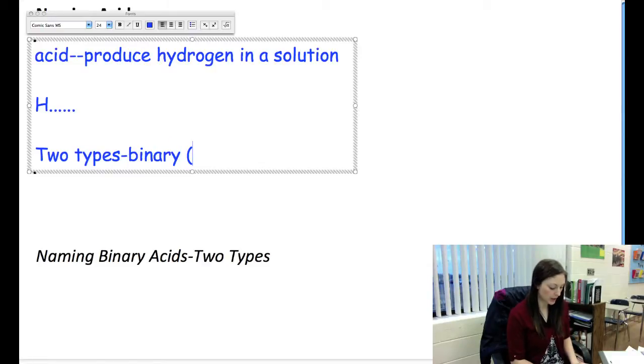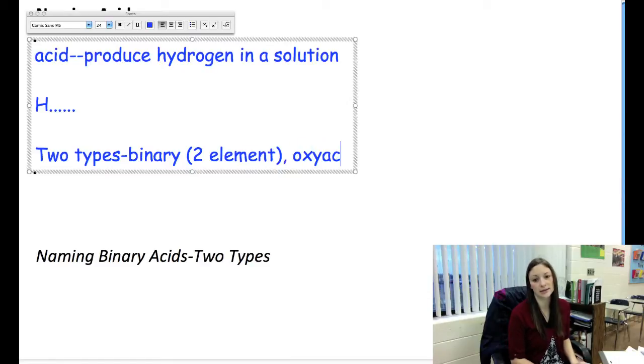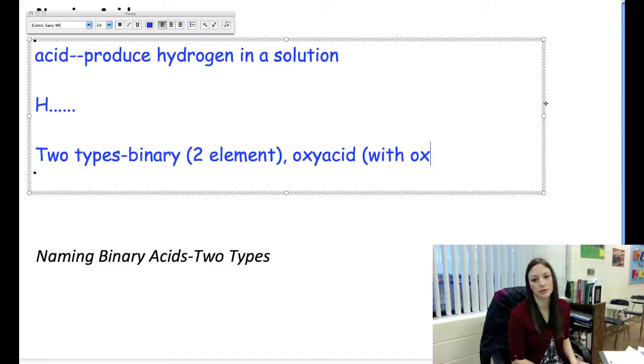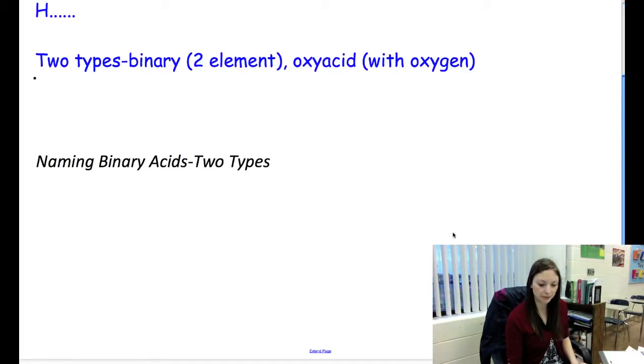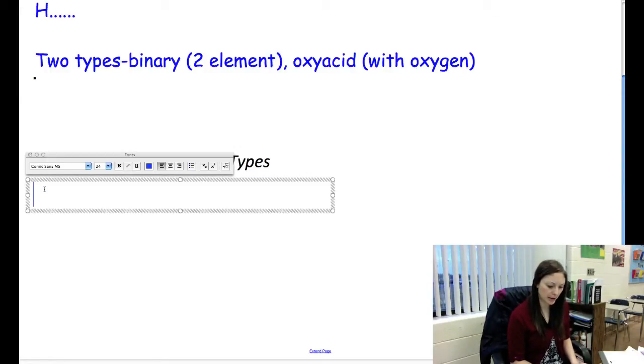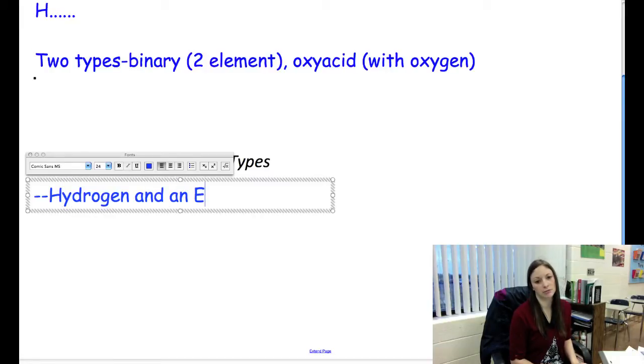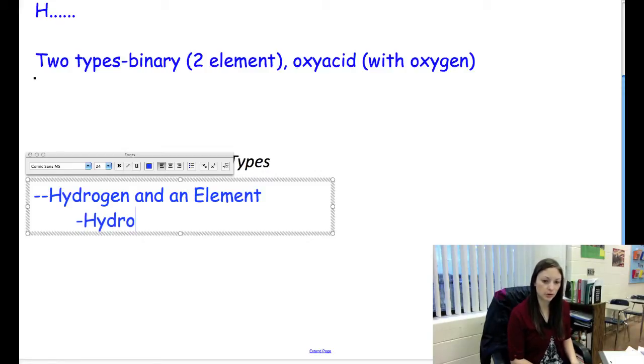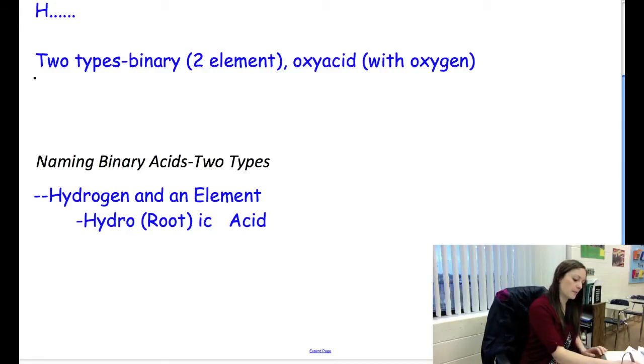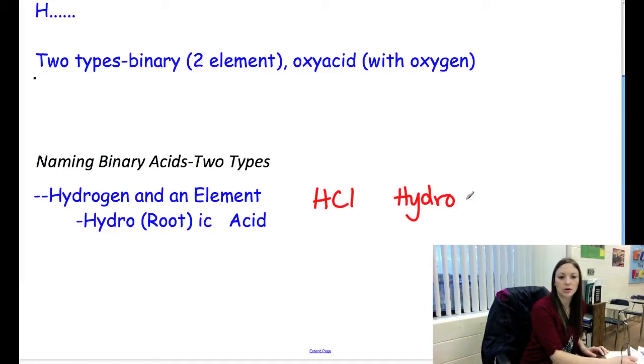We're going to have H something. There are two types of acids, and they are binary, where one's going to have two elements, or you're going to have an oxyacid. An oxyacid is just what it sounds like, something with oxygen. So let's take a look at our first type, which is binary. The first kind of binary acid is one that is just hydrogen and an element. And how you name those is you put hydro, and you go whatever the root name of the element is. Then you go -ic, and you write acid. So for example, if I have HCl, that's hydrogen and an element. So what I'm going to be? Hydro. Well, that's chlorine, so I do chlor. And then I put ic, hydrochloric, and then we write acid.